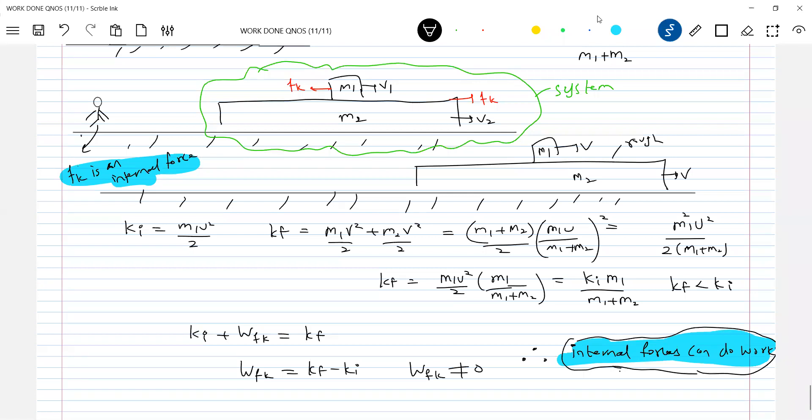Now, where did this energy go? Heat is generated. So where will this be converted? Converted as heat at the interface of block and plank.